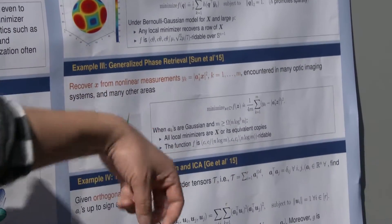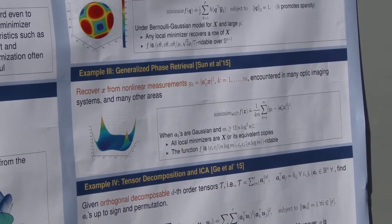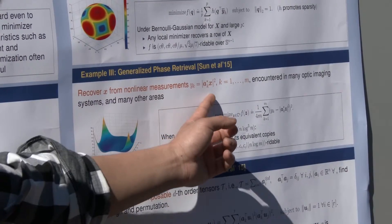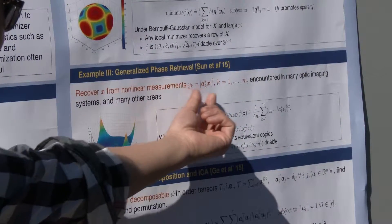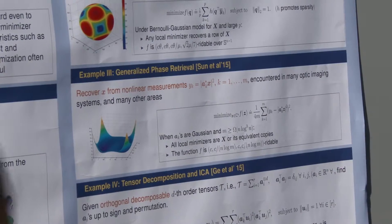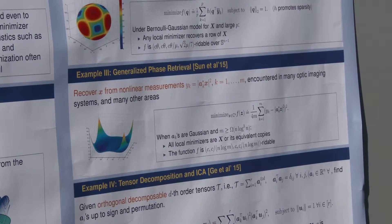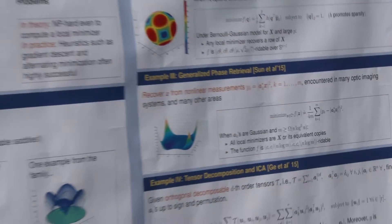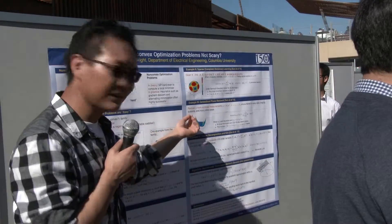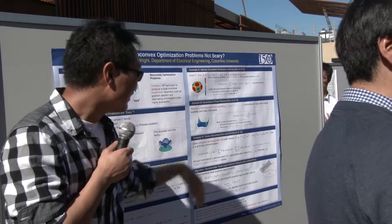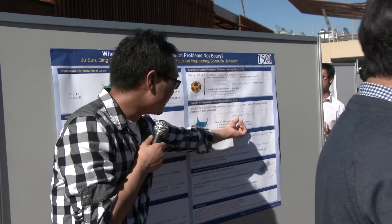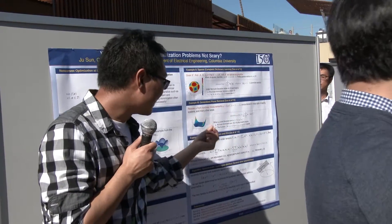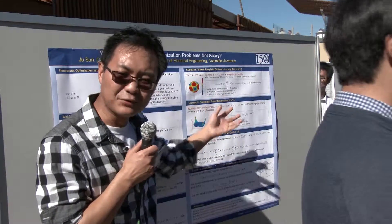The second example is about phase retrieval. Basically, what people do in phase retrieval is that you have an unknown signal and given linear measurement of the signal, but you only take the magnitude. You throw out the phase information and you want to recover the signal. People in the optic system are worried about that a lot. For this problem, we analyze a natural least-square formulation. And it turns out this least-square formulation, again, has this kind of nice structure.